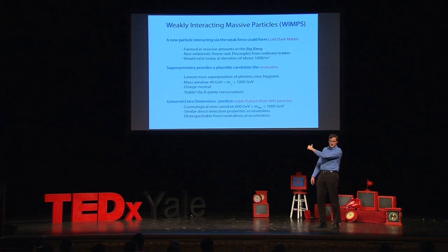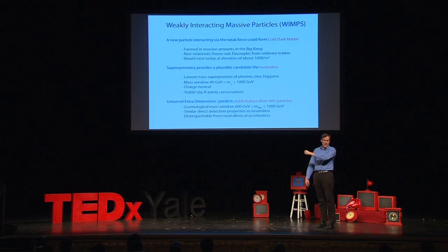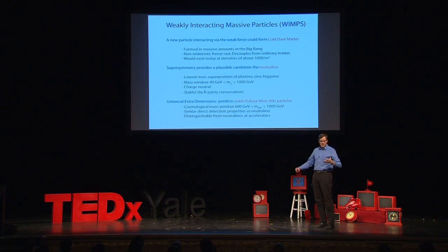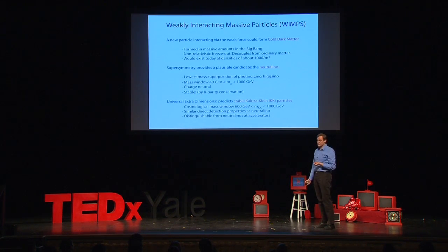Neutrinos are whizzing through us all the time, going through the Earth and through you all the time. If you take your thumbnail and point it toward the Sun, you're getting about 60 billion neutrinos per second through your thumbnail. Physicists get used to this notion that there's a lot out there in the universe around us that we can't sense with our five senses. This enormous amount of energy flowing through us in the form of neutrinos absolutely exists — we detect neutrinos all the time with sophisticated, sensitive instruments.